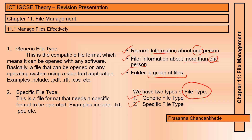Starting with generic file type — this is a compatible file format, which means it can be opened with any software on any operating system, such as standardized applications like .pdf, .rtf, .csv, etc. Specific file format is a format that needs specific software to be opened, such as .txt, .ppg, etc.